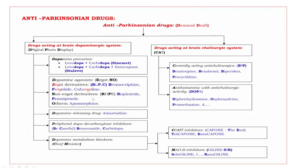Non-ERGOT alkaloids use the mnemonic ROPE, bold letters R and P. R: ropinirole. P: pramipexole. Under others: apomorphine. The next subgroup is dopamine releasing drug: amantadine.